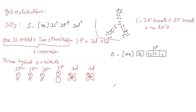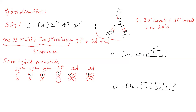The second oxygen atom also has configuration helium 2s² 2p⁴, with its 2p orbitals available. The third oxygen atom similarly has configuration helium 2s² 2p⁴.